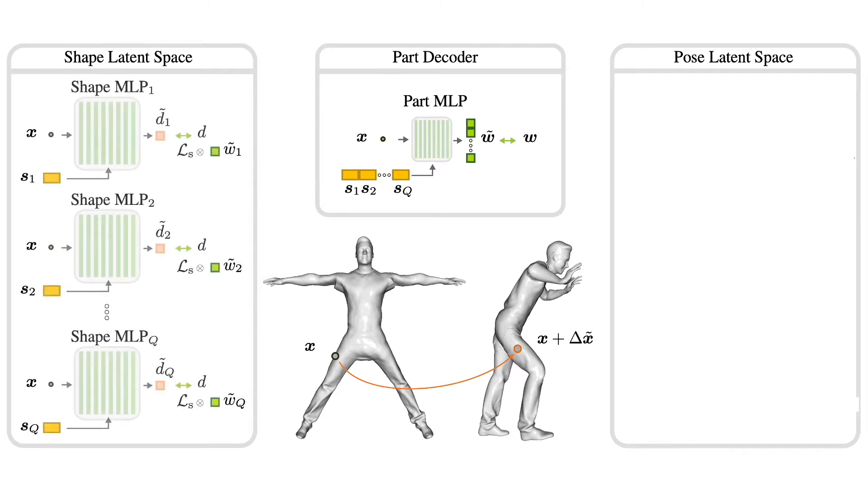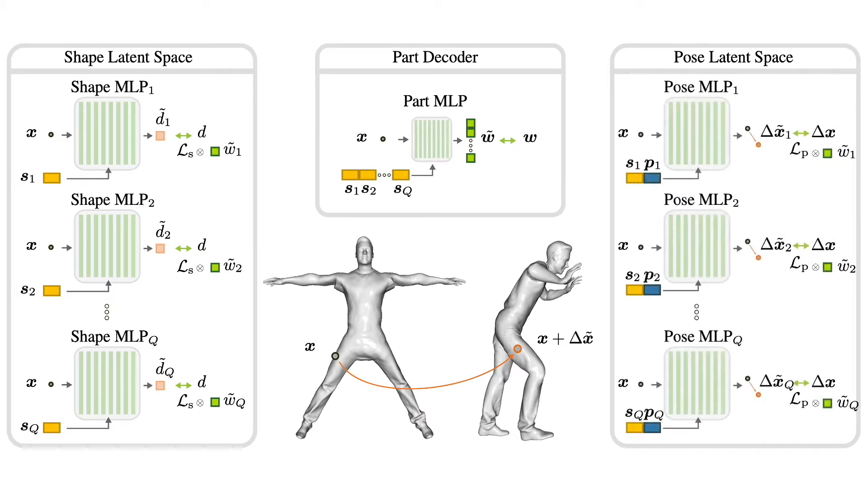The shape latent spaces learn to represent canonical space geometry by predicting SDF values. The pose latent spaces learn to deform the canonical space into a posed frame by predicting flow vectors.